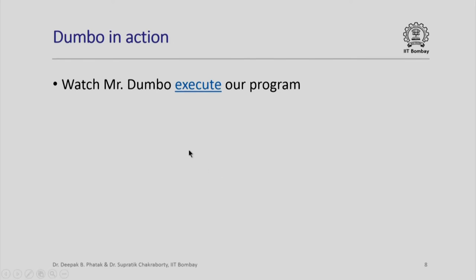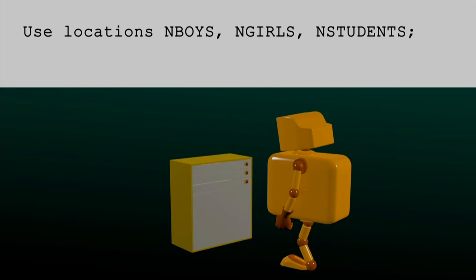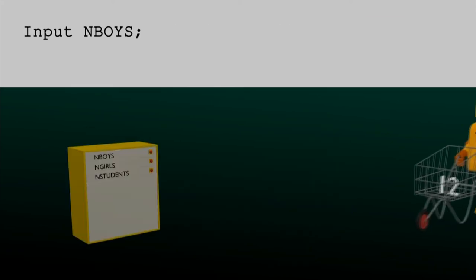Let us see what happens when Dumbo executes this program. First, Mr. Dumbo looks at the declaration instruction which says 'use locations n_boys, n_girls and n_students.' In response, it looks at the first name n_boys and puts a tag on one drawer. Then it looks at the next name n_girls and puts the tag n_girls on the second drawer. It does the same thing with the last name n_students. So he now has three named memory locations, one corresponding to each.